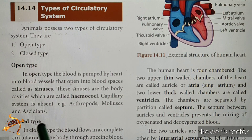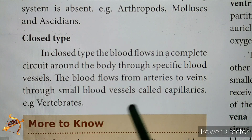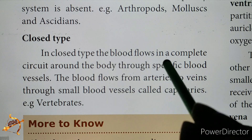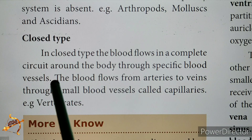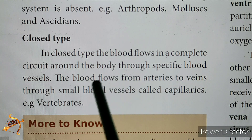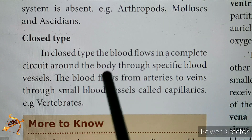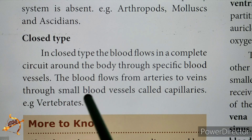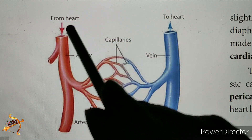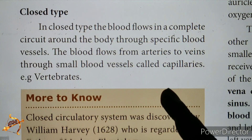In the closed type of circulatory system, found in vertebrates, blood completes a circuit around the body through specific blood vessels. Blood flows from arteries to veins through small blood vessels called capillaries. This is the closed circulatory system.